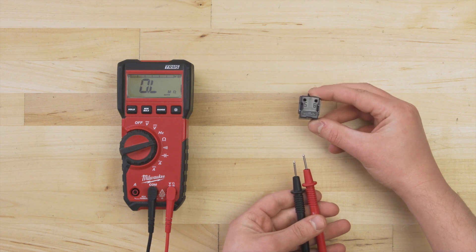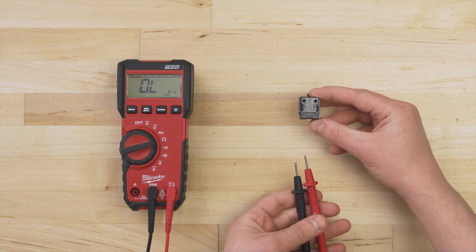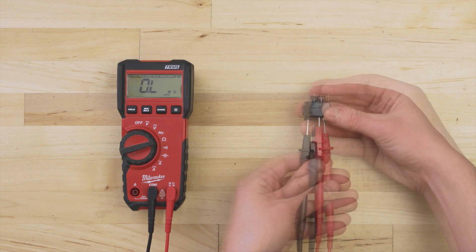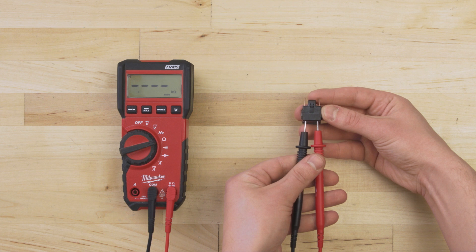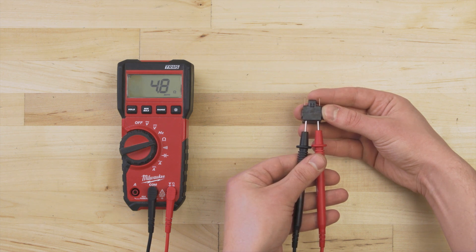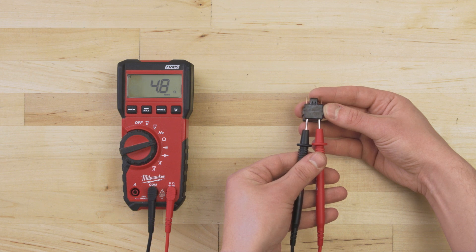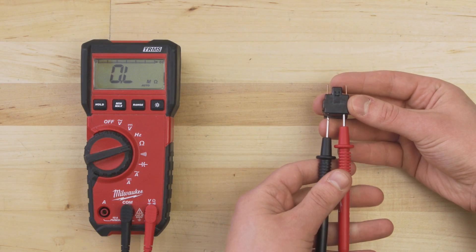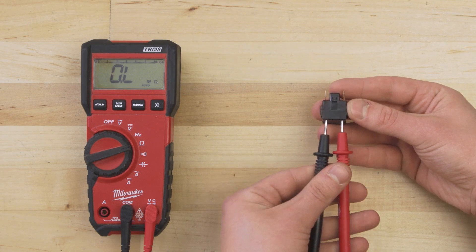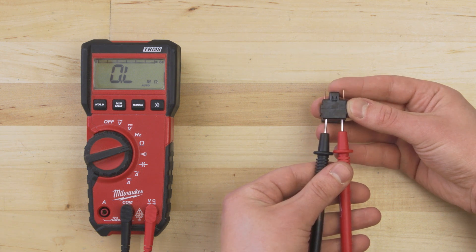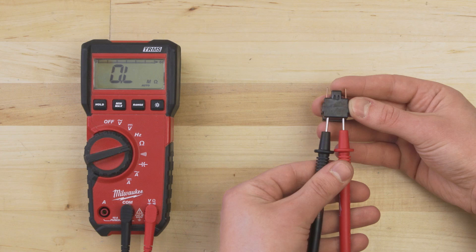You can test the PTC relay for resistance. Simply test between the R and S terminals, which might be labeled 5 and 6. The resistance should be between 3 to 12 ohms at room temperature. If there is no resistance and no continuity, or if the resistance is extremely high, then the relay has failed and will need to be replaced.